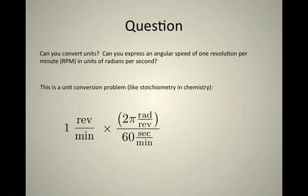One revolution can be cast into radians if we remember that there are two pi radians per revolution. And since we're converting from units of per minute to per second, we need to convert the bottom unit down here as well.